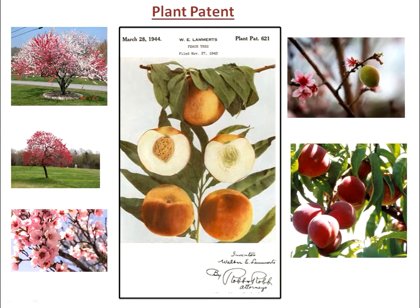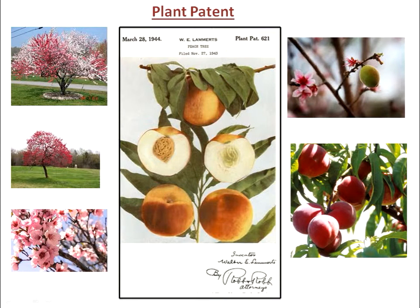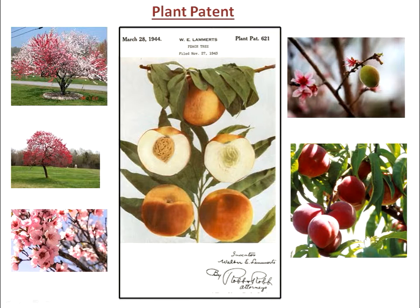This is an early plant patent from 1943. The full patent includes a very complete biological description of the fruit tree, including descriptions of the trunk, the leaves, the fruit color, texture, and much more.